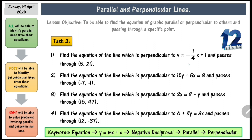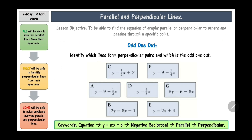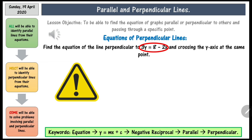This is the final task: find the equation of the line perpendicular to the following lines given. Be careful — they are not all in the form y equals mx plus c; you may have to rearrange and do some division. I will give you the answers, along with the challenge question, in another video. For the challenge: find the equation of the line perpendicular to 3y equals 8 minus 2x, and crossing the y-axis at the same point. You must rearrange and divide first to get it into the form y equals mx plus c.